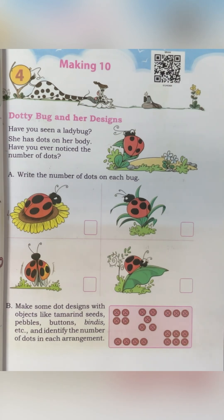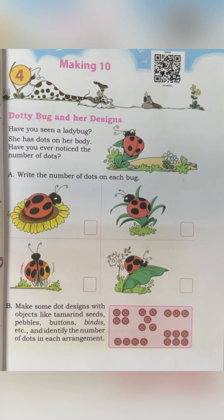It is very simple. If you add 1 to 9, it becomes 10. After number 9, it is 10. So it is very simple. Let's begin.